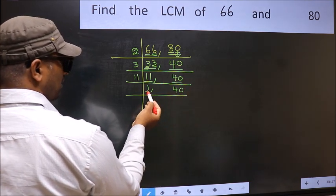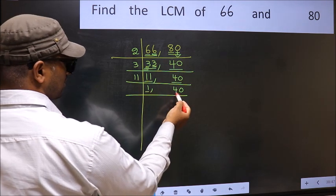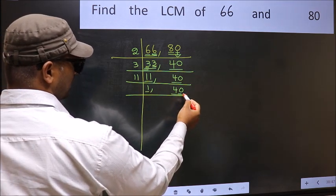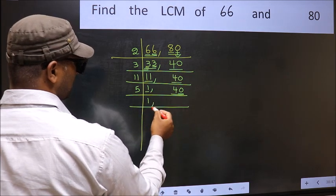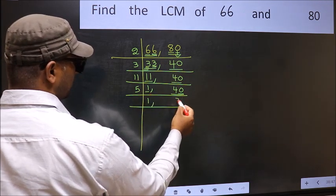Now we got 1 here, so focus on the other number 40. Last digit 0, so take 5. When do we get 40 in the 5 table? 5 times 8 is 40.